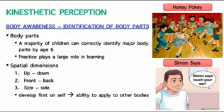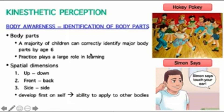We can also measure kinesthetic perception by looking at body awareness — a person's ability to identify certain body parts. Most people can correctly identify major body parts by the age of six, but practice plays a large role in learning this. Games like the hokey pokey — 'put your right foot in, put your right foot out' — help children understand what their body parts are, and that's really important.